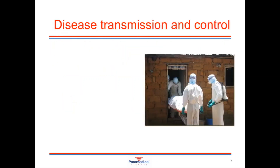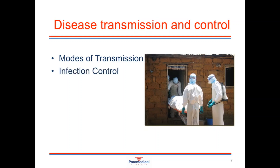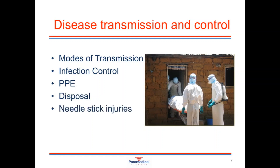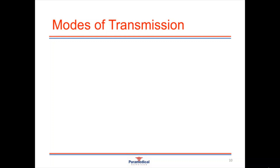In this next section we'll look at disease transmission and control. We'll discuss the different modes of transmission and the chain of infection, then look at different infection control methods including personal protective equipment, disposing of contaminated waste, and managing needlestick injuries. In order for a disease or pathogen to spread from one person to another, it needs to have a mode of transmission.